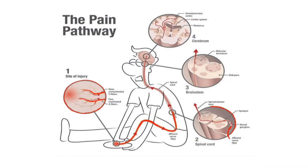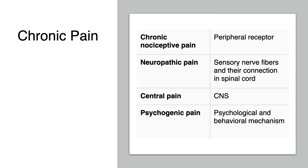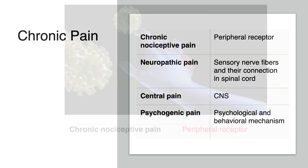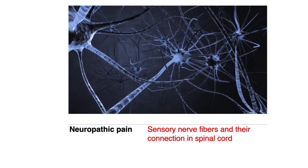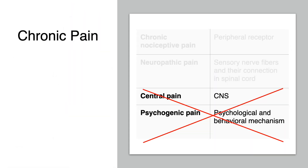Let me describe the nociceptive pain pathway first. Within the pain pathway, there are three orders of neurons that carry action potentials signaling pain. Chronic pain can be differentiated into several types. Chronic nociceptive pain arises from peripheral receptors. Neuropathic pain comes from the pathology of the sensory nerve fibers and their connection to the spinal cord. Central pain and psychogenic pain are not the area of interventional pain procedures.